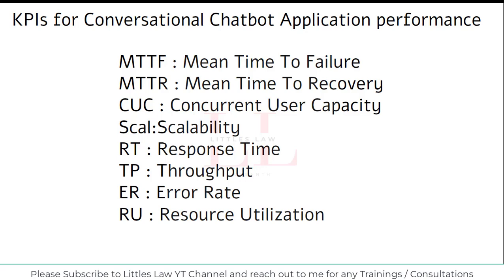A lower MTTR indicates quicker recovery and less disruption to users, which is crucial for maintaining a smooth user experience. Next is Concurrent User Capacity (CUC), which represents the maximum number of users who can interact with the chatbot simultaneously without causing significant performance issues.